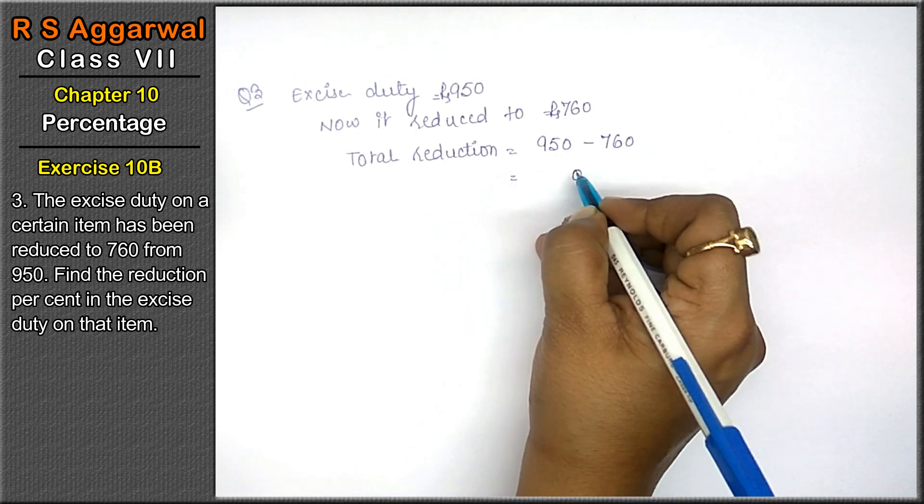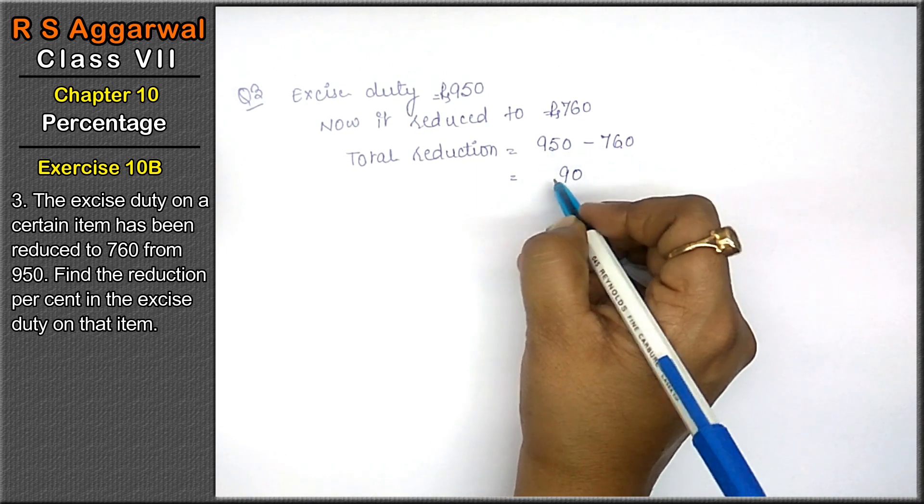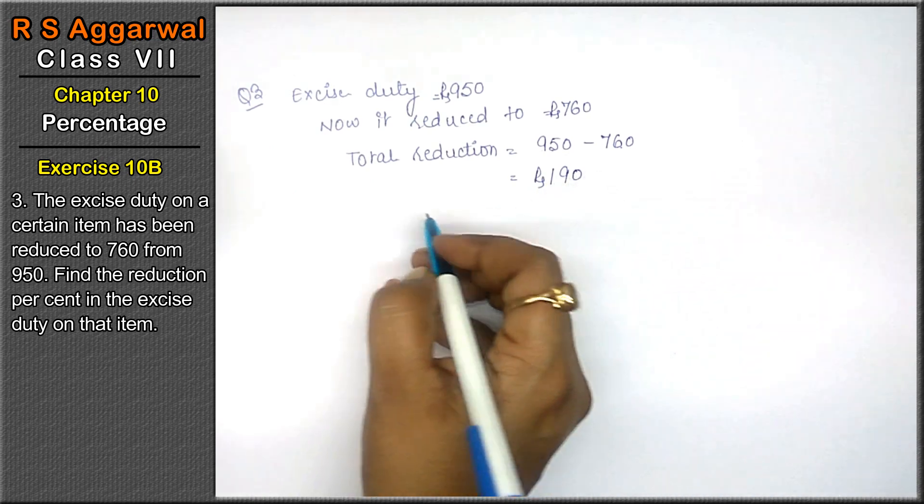That means 190. 5 from 9 is 4 and 6 from 7 is 1. 190 is reduced.